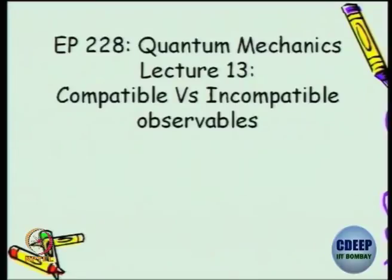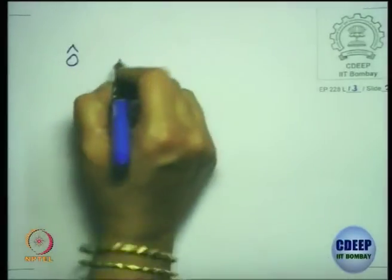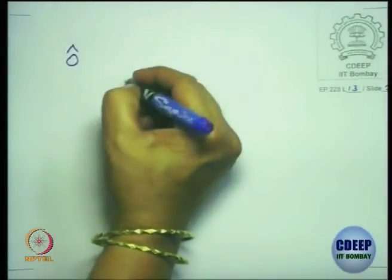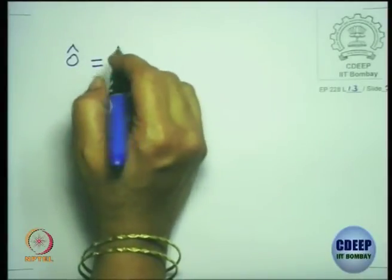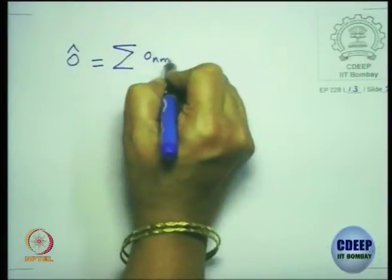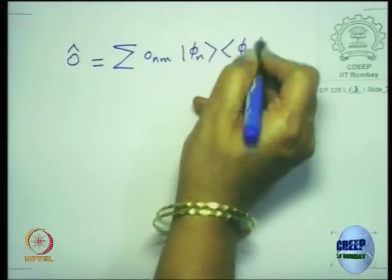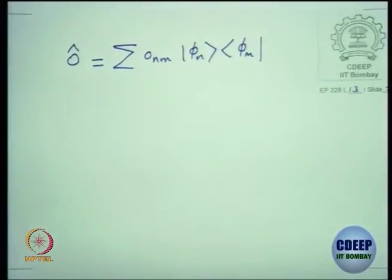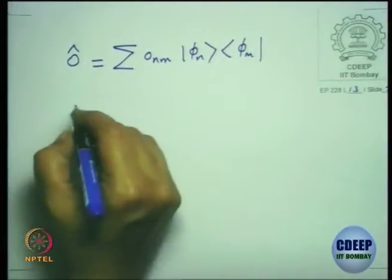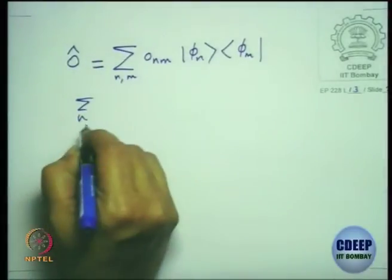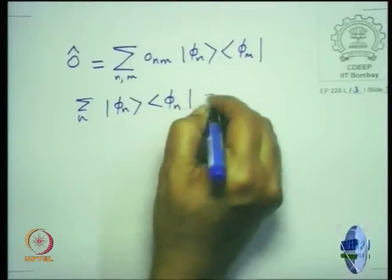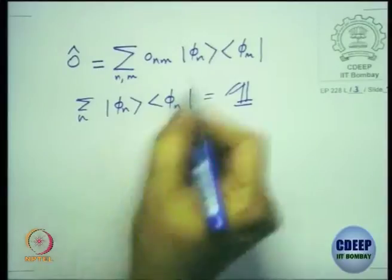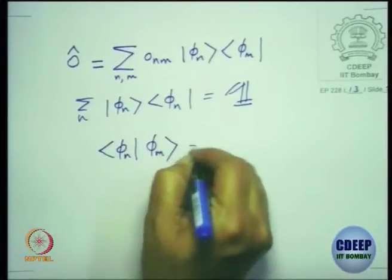Before getting on to this, let's recap some things we know. Operators acting on the Hilbert space correspond to observables. We have said that O-hat is a linear operator, and in a finite dimensional space you can give it a representation involving |φ_n⟩⟨φ_n|. These form a complete set of bases, meaning summation over n of |φ_n⟩⟨φ_n| is the identity operator, and we use them to be orthonormal, i.e., delta_{ℓn}.